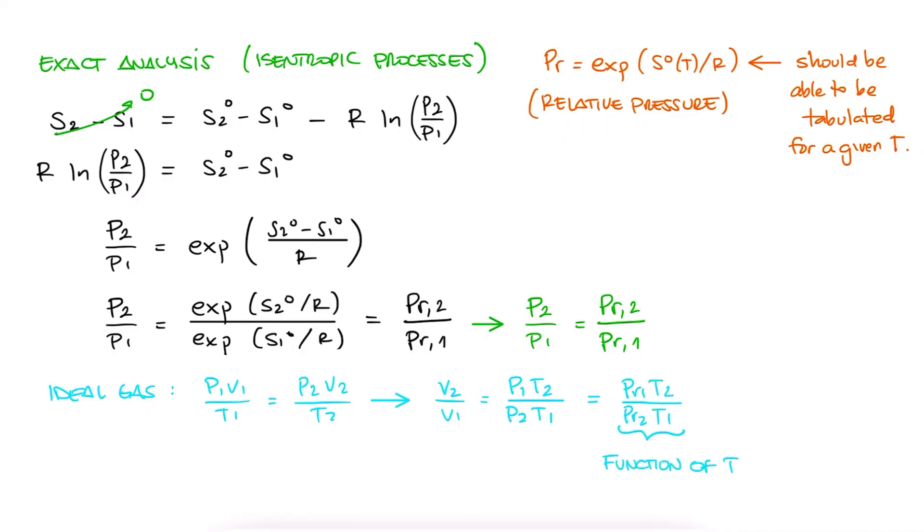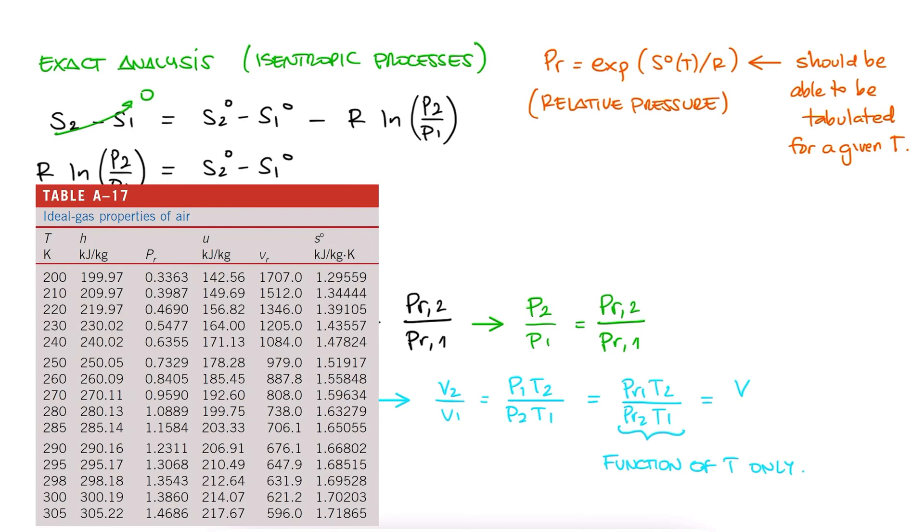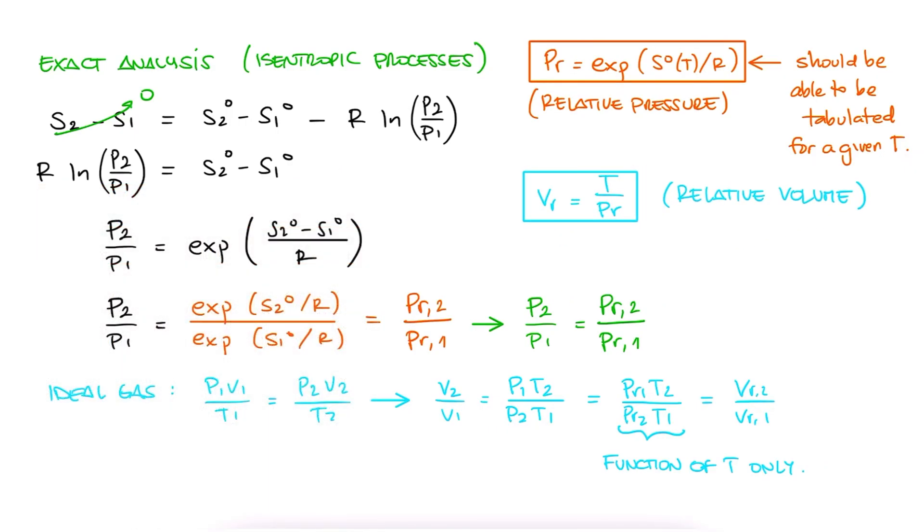since the right-hand side is a function of temperature only, it makes sense that we can have a tabulated value for a given temperature. This v2 over v1 term is also relative volume 2 over 1, where our relative volume is T over Pr.